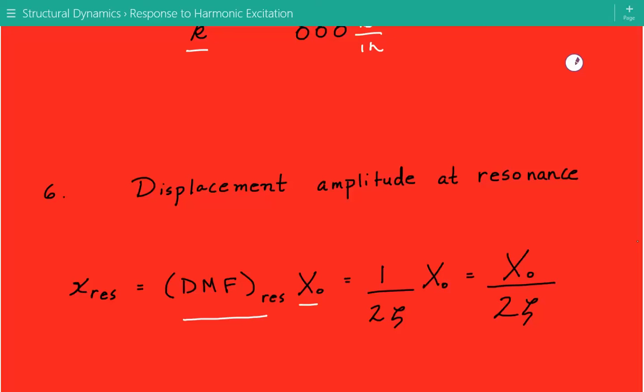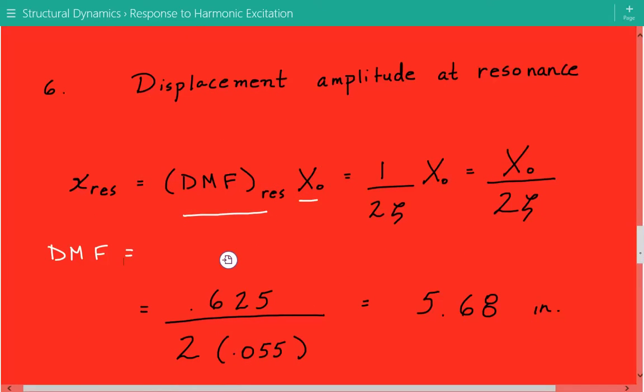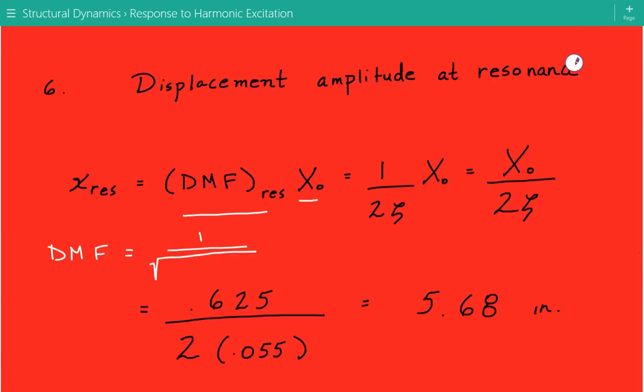The dynamic magnification factor DMF, the regular formula for this, equals 1 divided by the square root of (1 - r²)² plus (2ζr)². If you see in this regular equation of the DMF, it requires us to know the frequency ratio r, but in the problem statement we weren't given r.